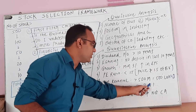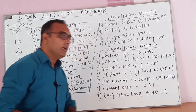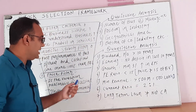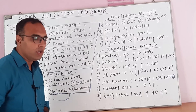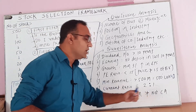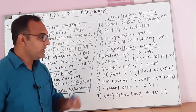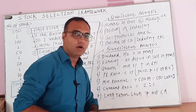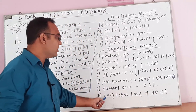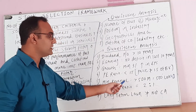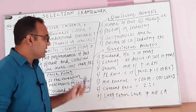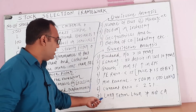If the current ratio equals 2:1 — meaning current assets are two times the current liabilities — the company is at a better stage. Number seven, long-term loan — the long-term loan should not exceed the net current assets. You can find net current assets by applying the formula: current assets minus current liabilities. If the long-term loan does not exceed the net current assets, the company is again at a better position.